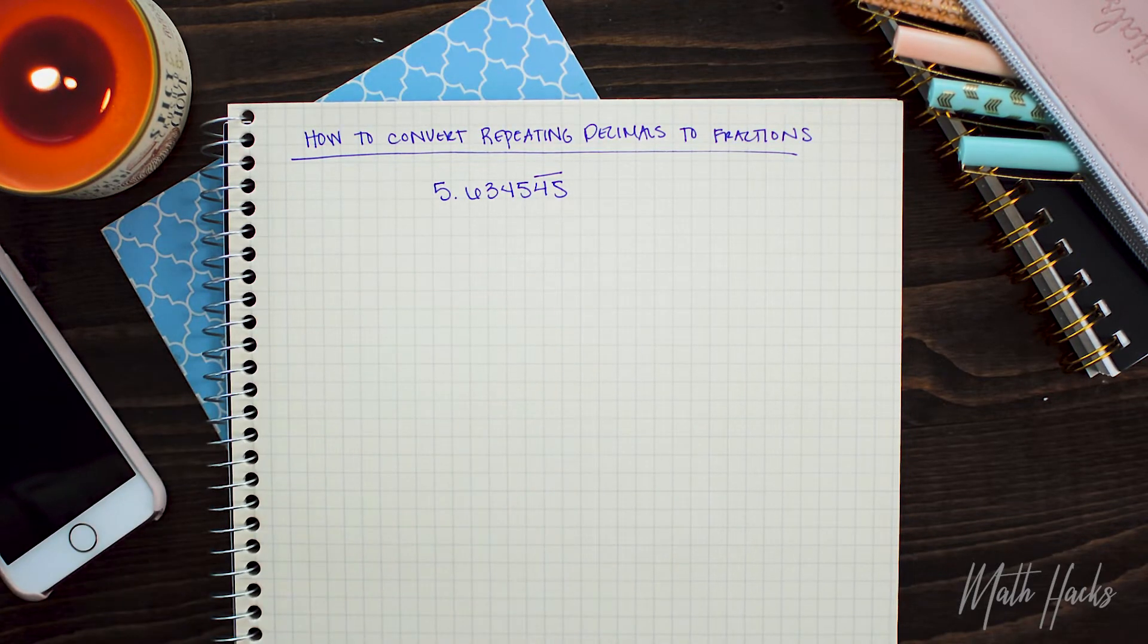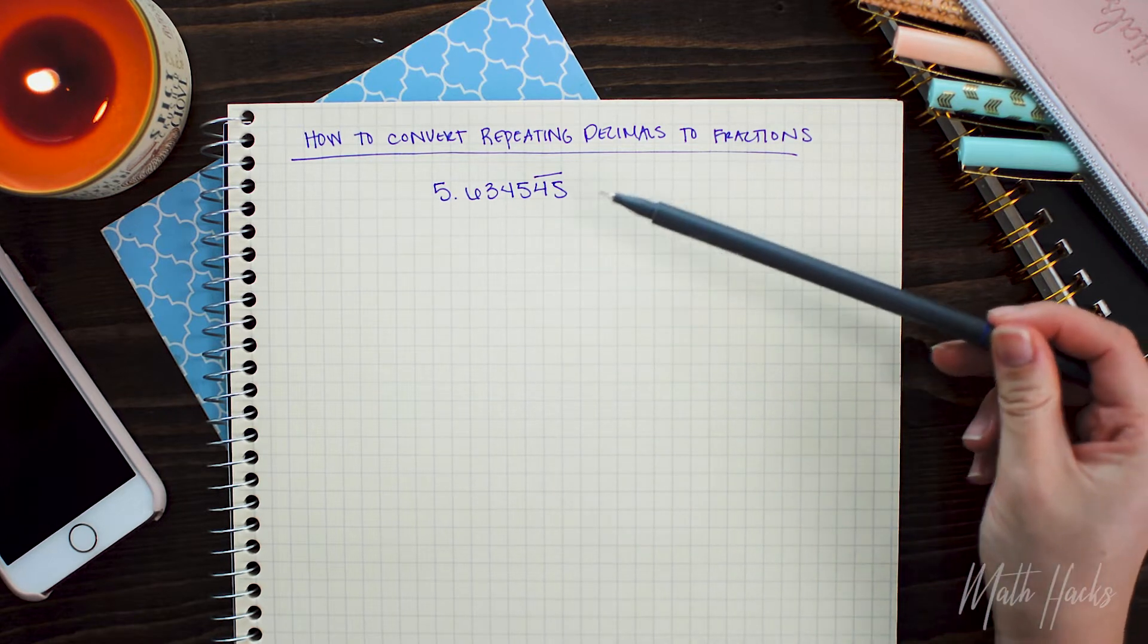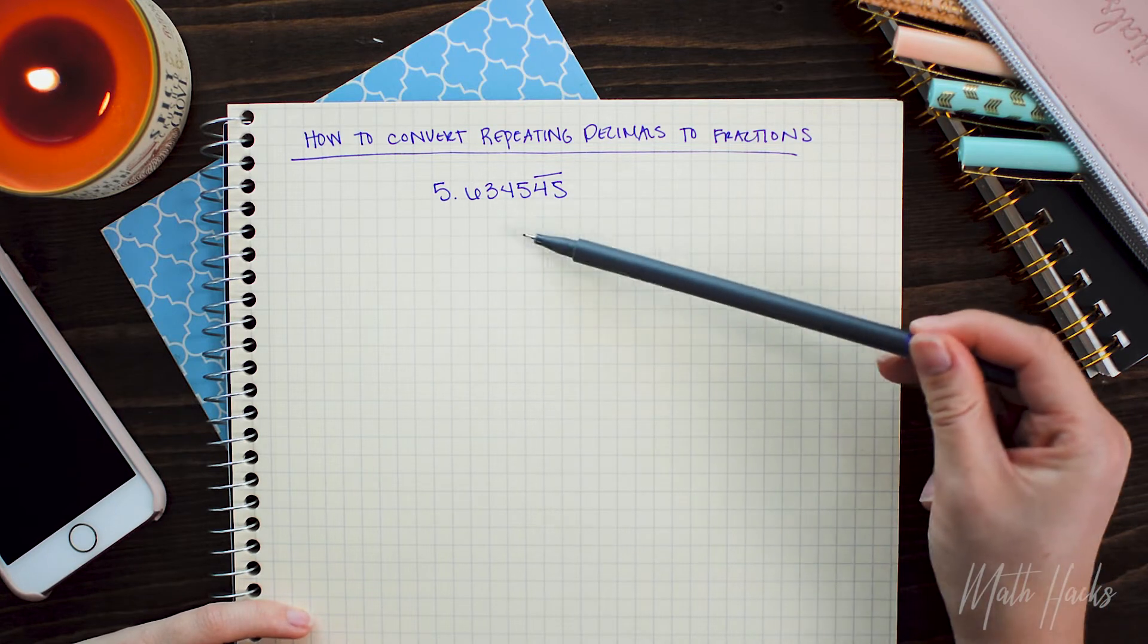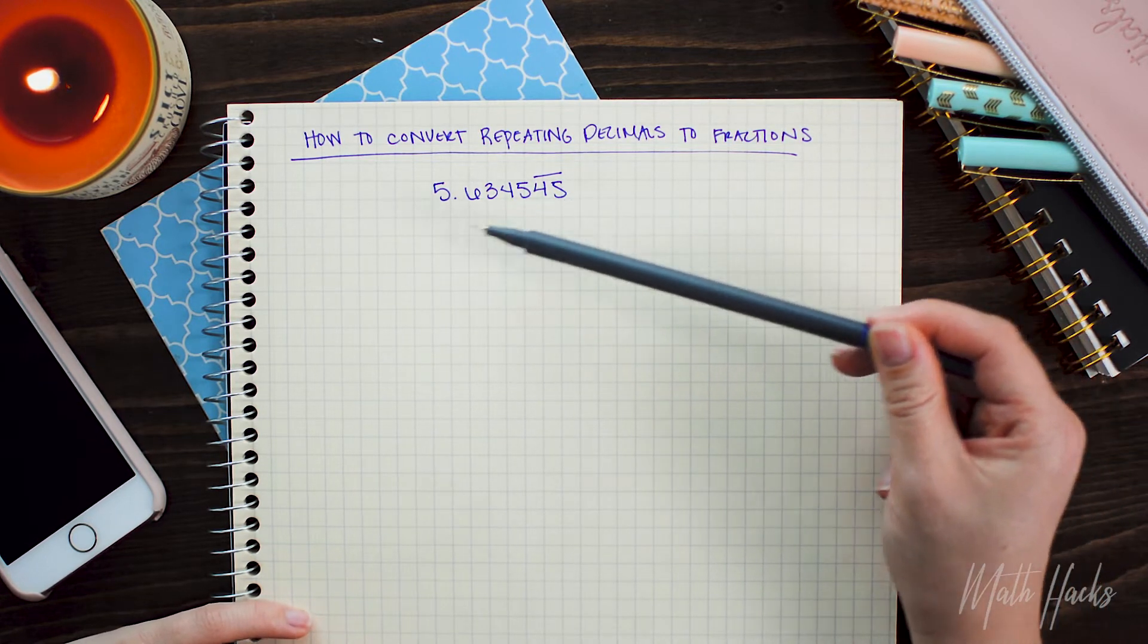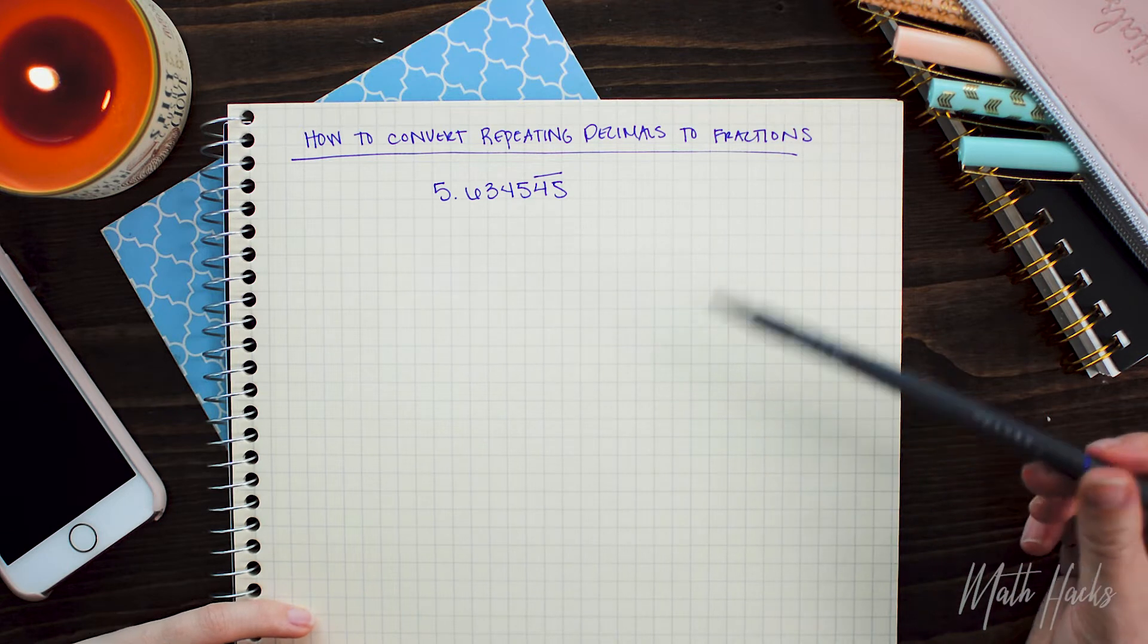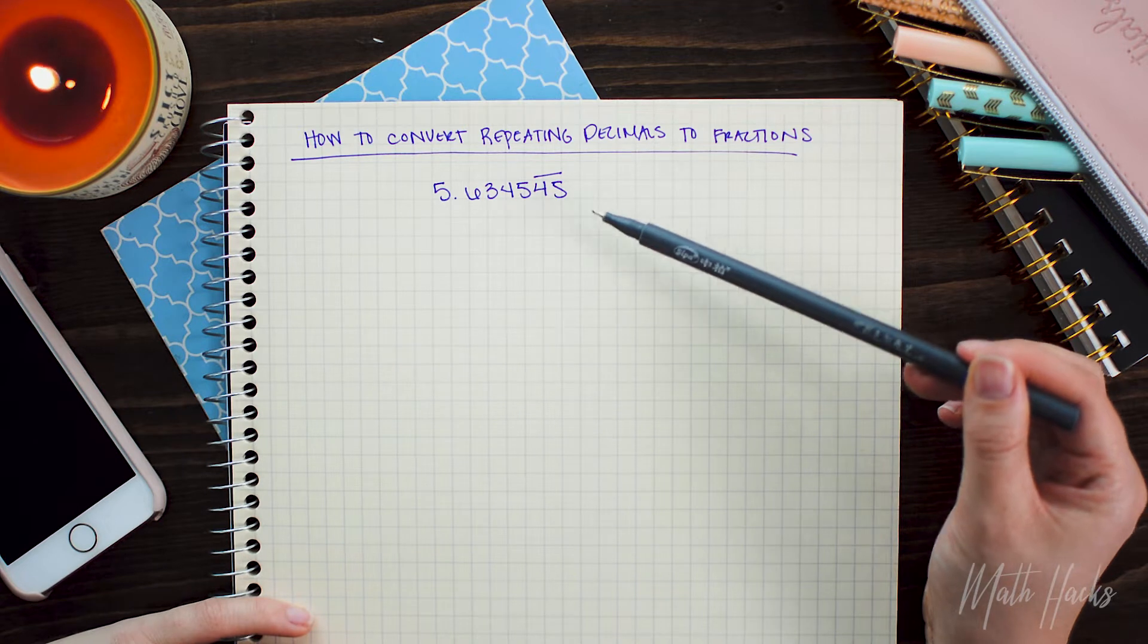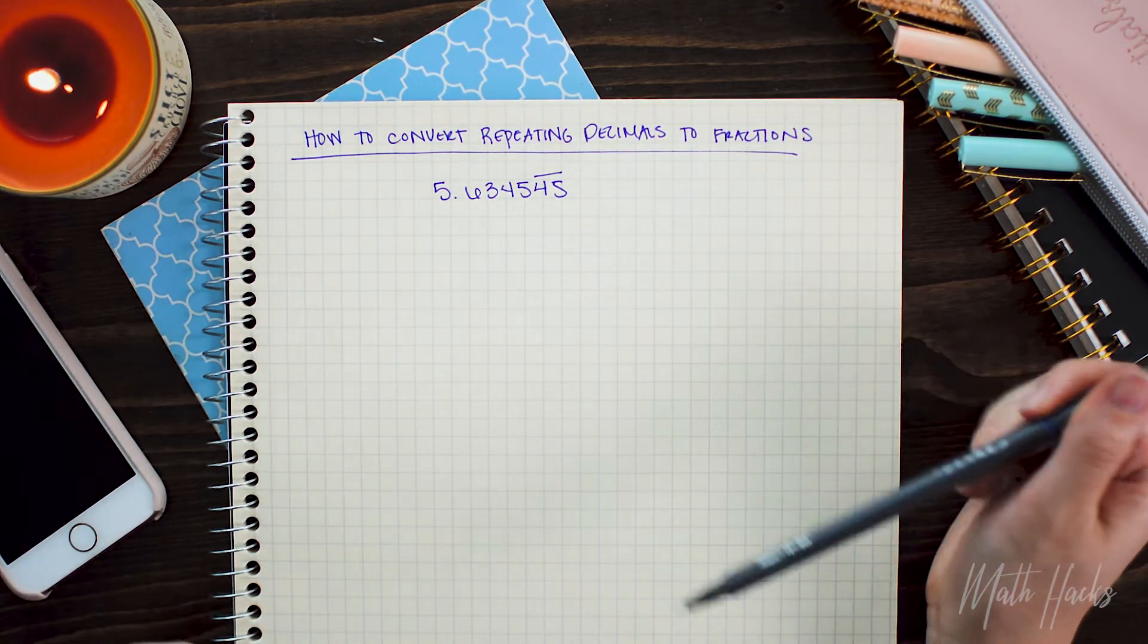The first thing you want to do is make sure you have a repeating number. So you can tell you have a repeating number if you have a bar over some decimals, now this means that these two decimal places are going to repeat in this pattern forever. So we'll have 5.6345454545 and so on. You can also see it sometimes without the bar and just an ellipsis written afterwards. That also means that the 4 and 5 will repeat forever.